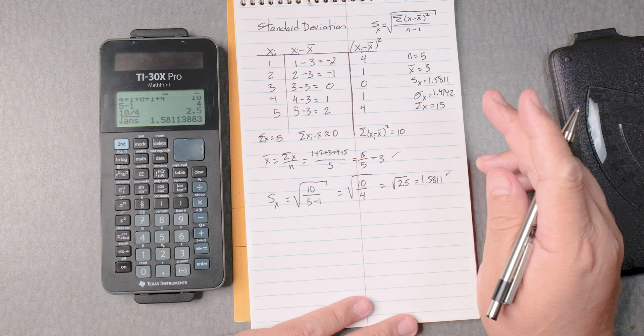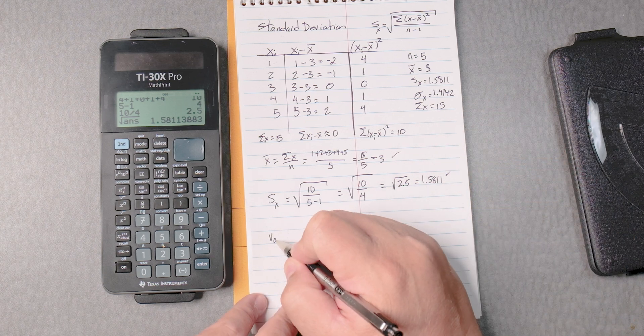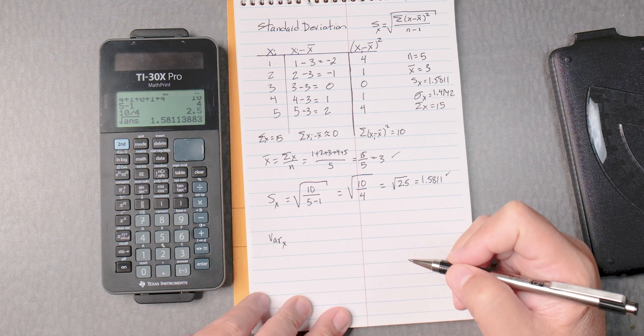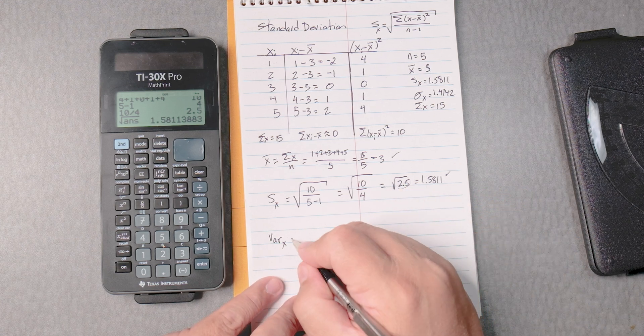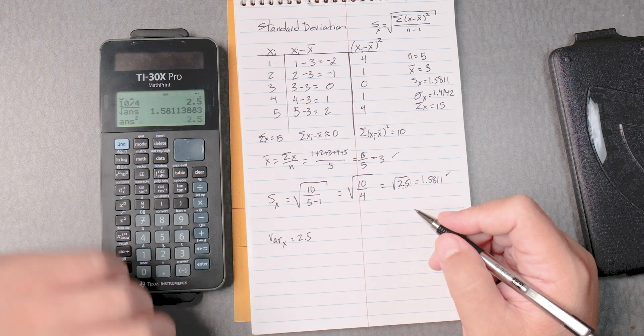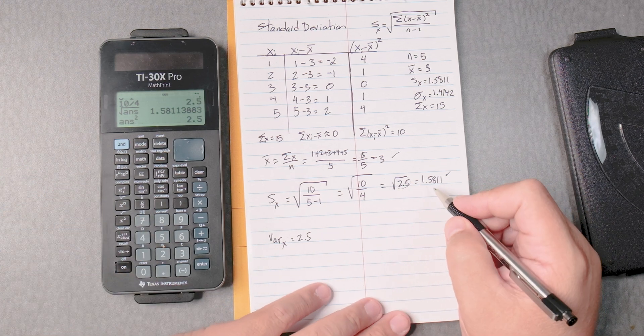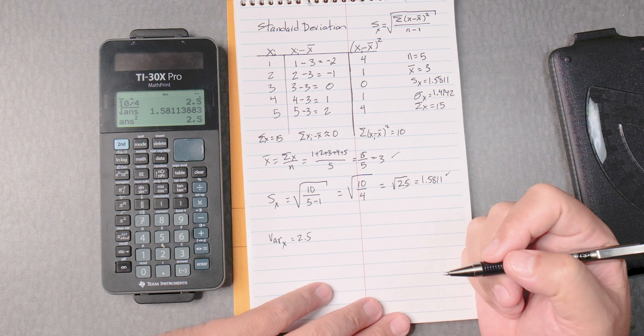Some of you might need what they call the variance. The variance, and that is this number right here, 2.5. It's the square of the square root value. So, that's going to be 2.5.